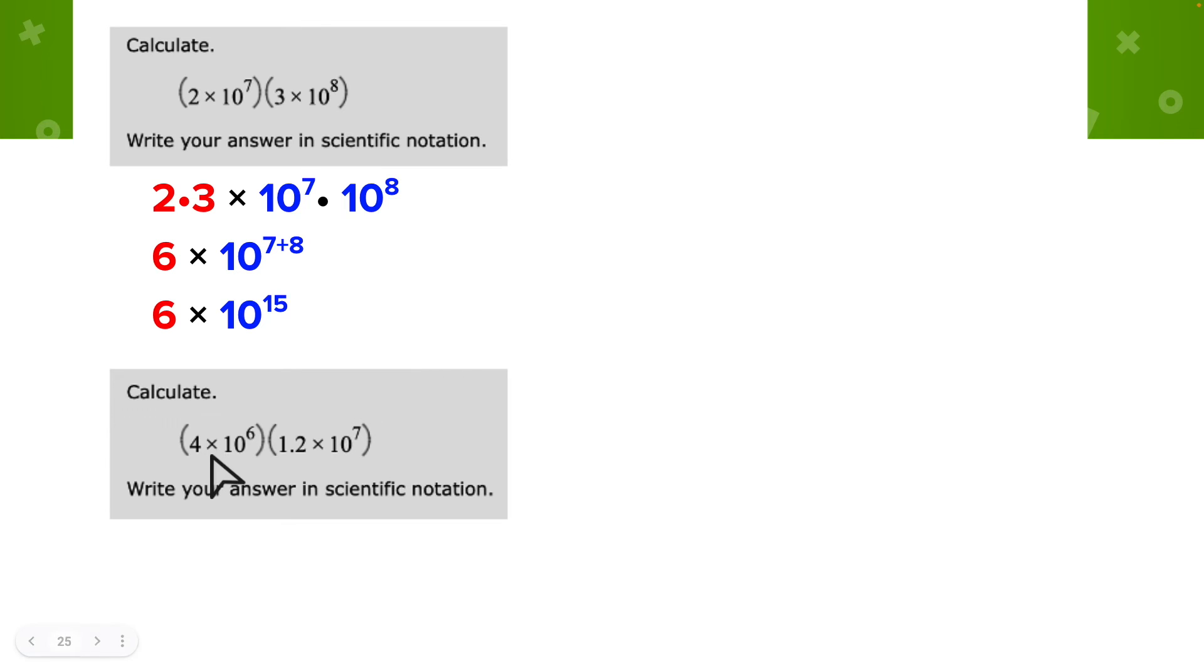All right, so let's do the same thing with this next one. We have 4 times 10 to the 6th power, 1.2 times 10 to the 7th power. So we're going to group the coefficients, 4 times 1.2, and then 10 to the 6th power and 10 to the 7th power. So 4 times 1.2, we get 4.8. And then we have the same base, so I'm going to add the exponents. So we get 4.8 times 10 to the 13th power.